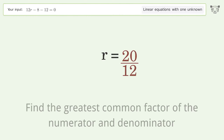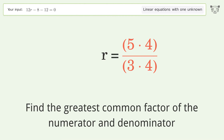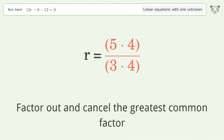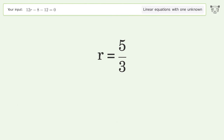Find the greatest common factor of the numerator and denominator. Factor out and cancel the greatest common factor. And so the final result is r equals 5 over 3.